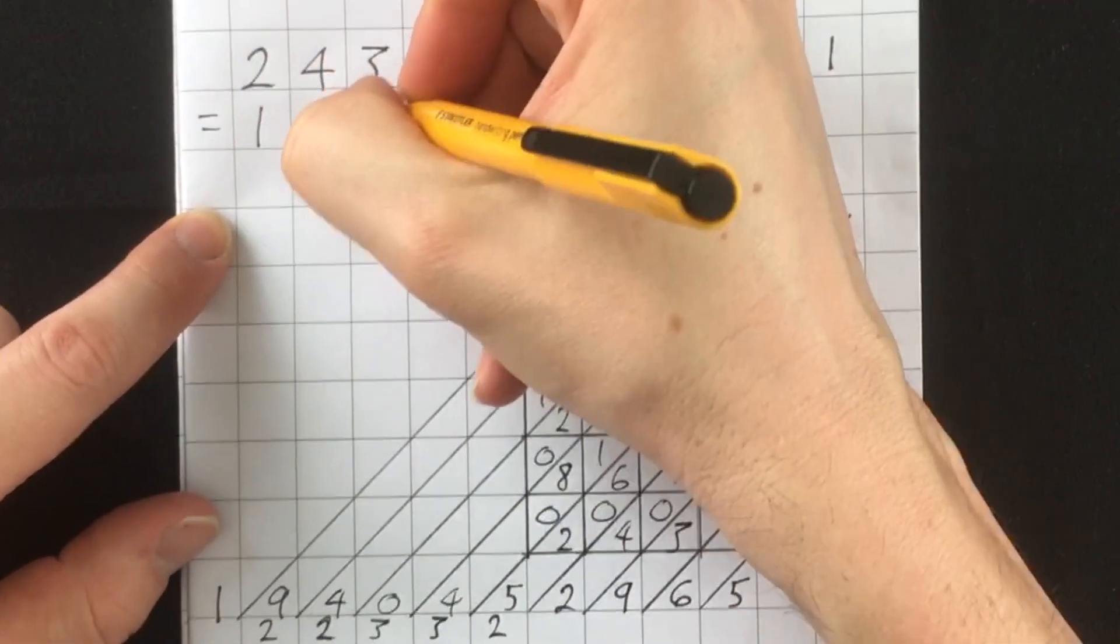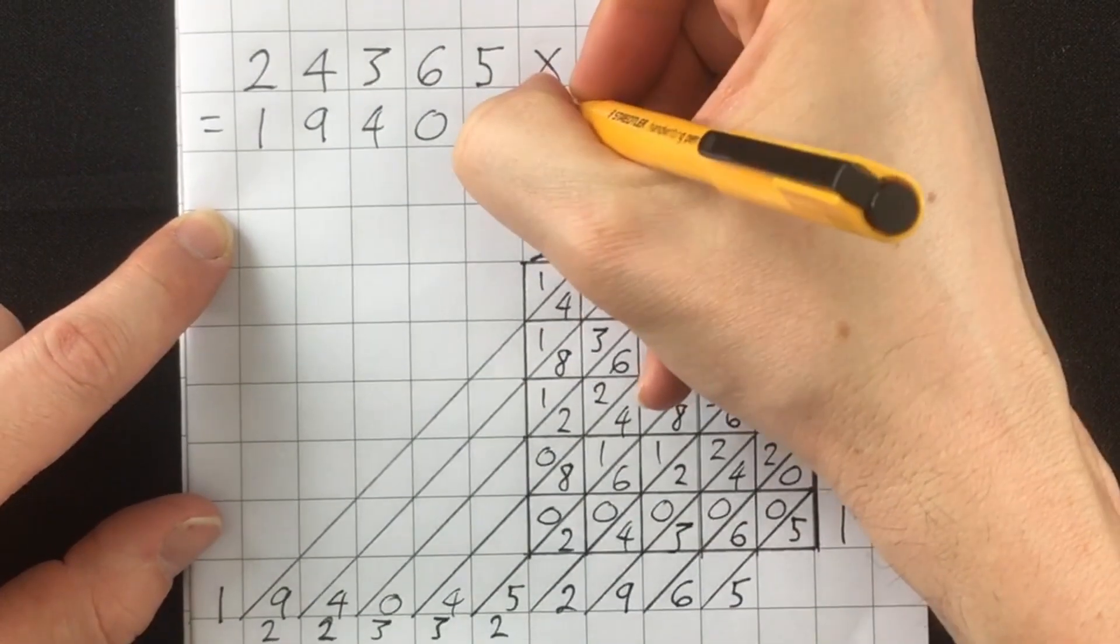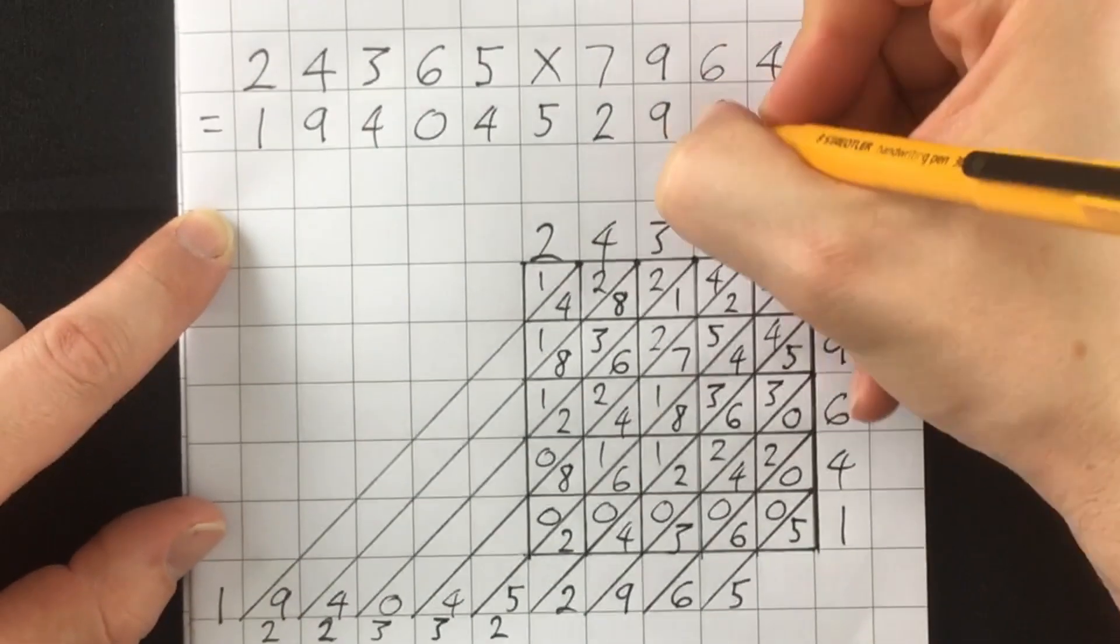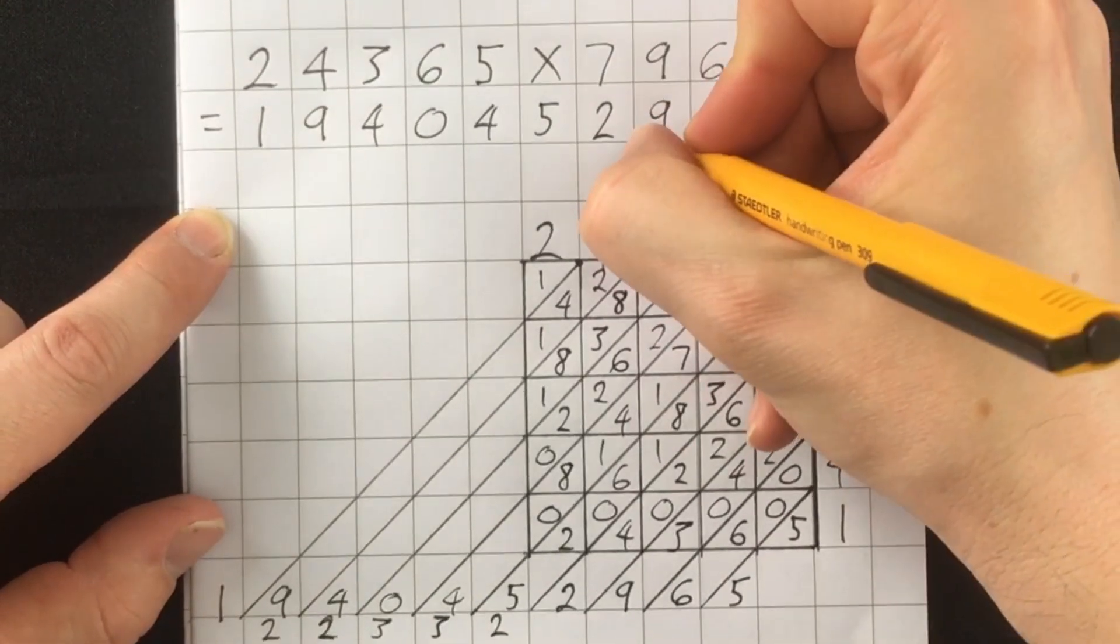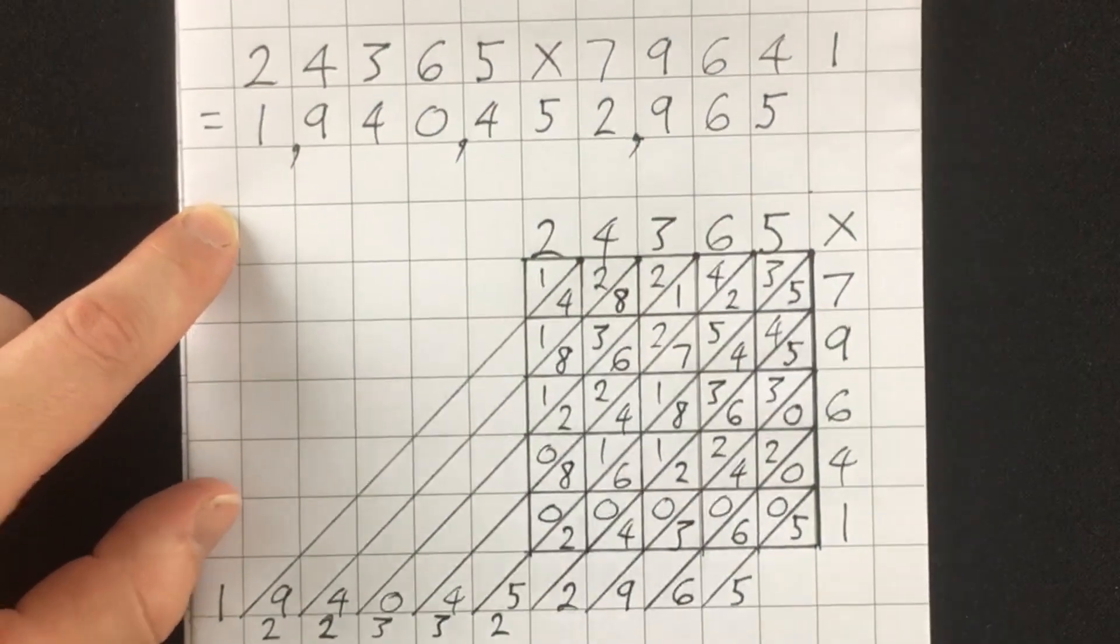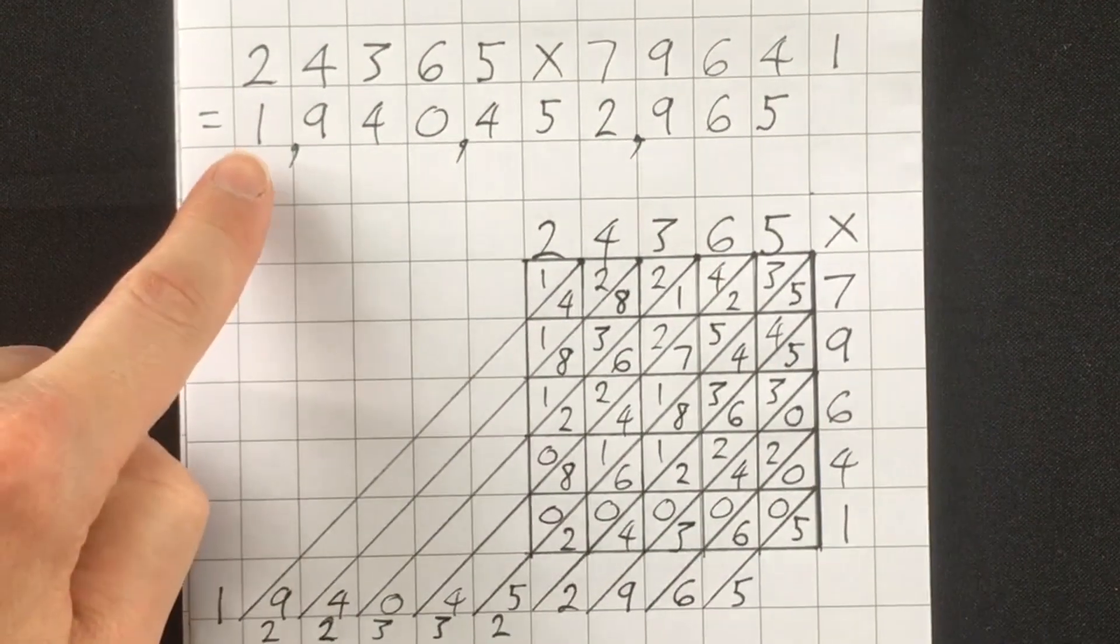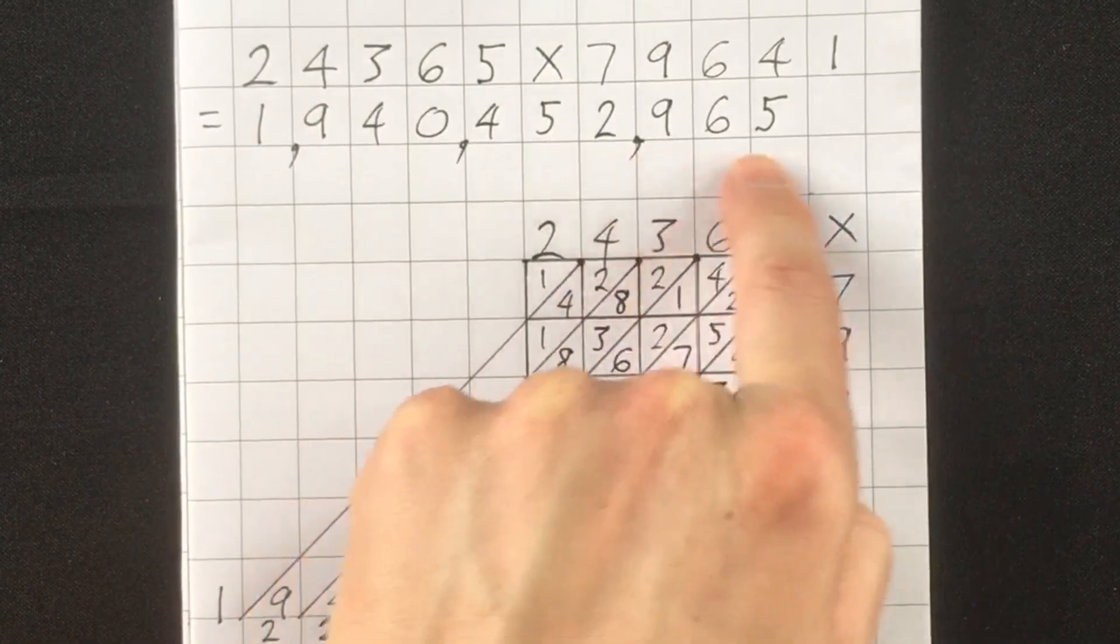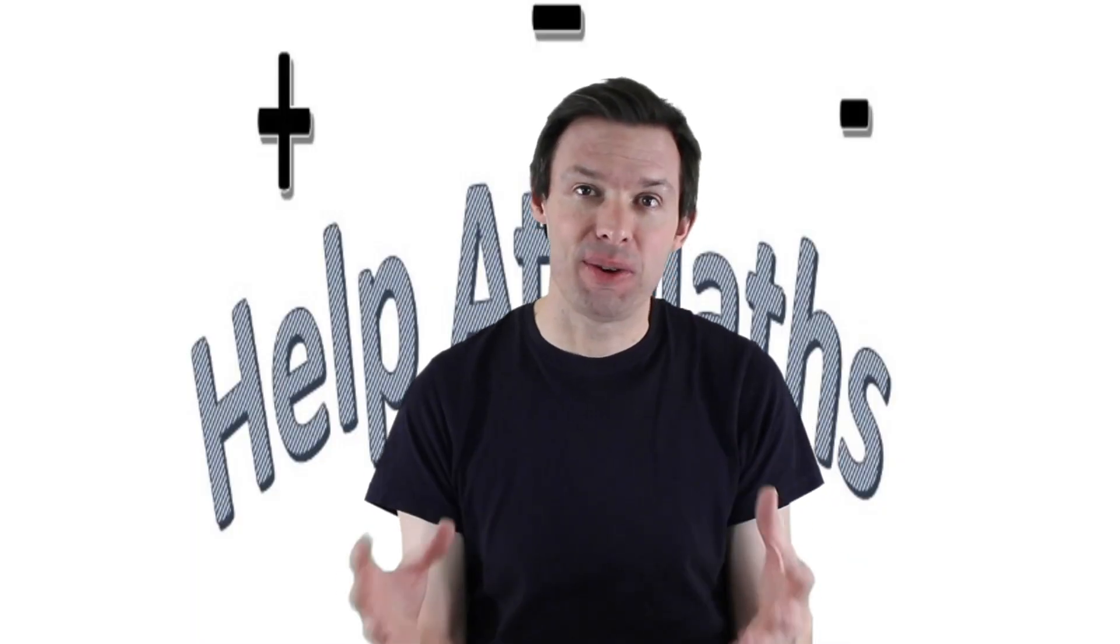And it looks like the answer we are left with is one, nine, four, zero, four, five, two, nine, six, five. So in terms of American billions, it would be one billion, nine hundred and forty million, four hundred and fifty two thousand, nine hundred and sixty five. So my challenge to you today is to invent your own problems.